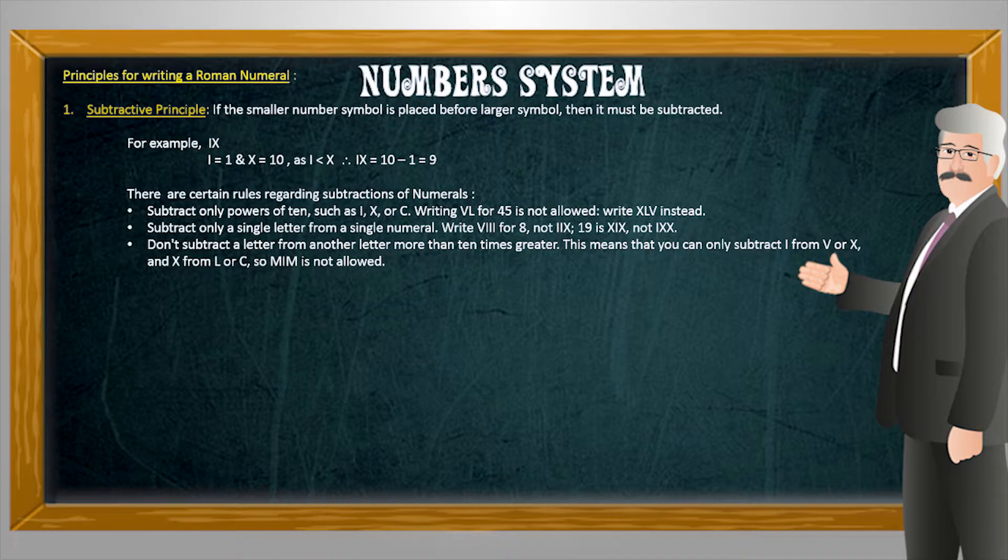There are some rules for subtraction as well. Subtraction should only happen when the numerals are in the powers of 10 such as I, X, or C. Only a single letter from a single numeral can be subtracted. A letter cannot be subtracted if the other letter is more than 10 times greater than the smaller letter.